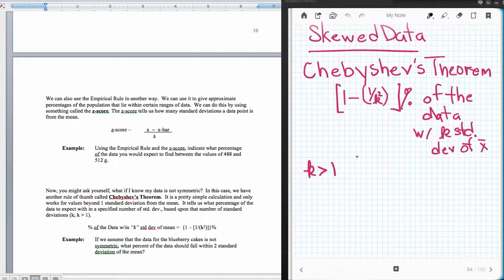With skewed data, we use instead of the empirical rule to tell us a percentage, we use Chebyshev's theorem. Chebyshev's theorem says that one minus one over k squared percent of the data will lie within k standard deviations of the mean. And k always has to be greater than one, because otherwise we end up with zero, and that doesn't make much sense.